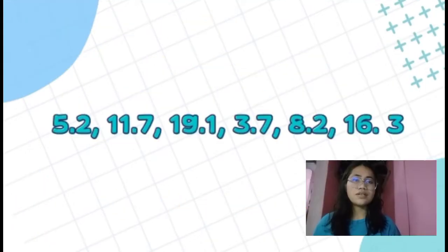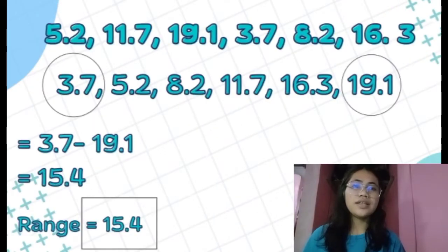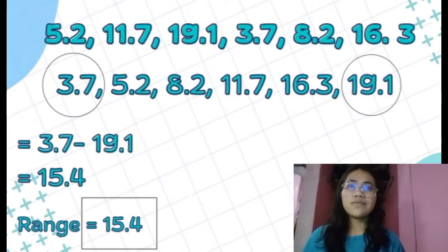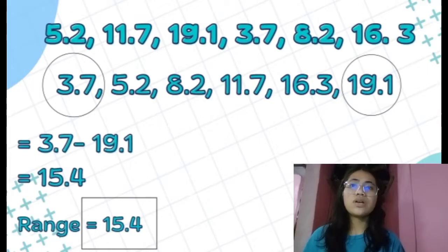So we have a given data set here. We are going to arrange them from least to greatest. After that, we have to subtract the least number from the greatest number. So 19.1 minus 3.7 is equal to 15.4. So our range is 15.4.